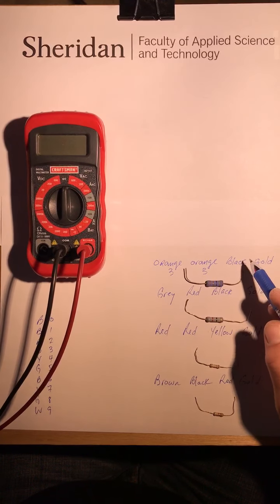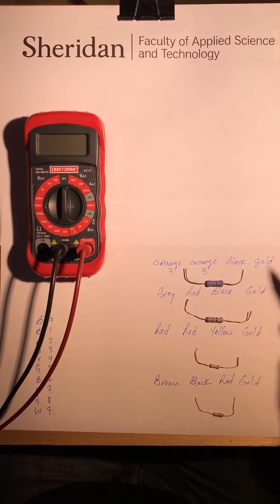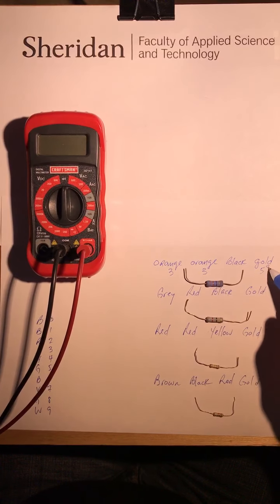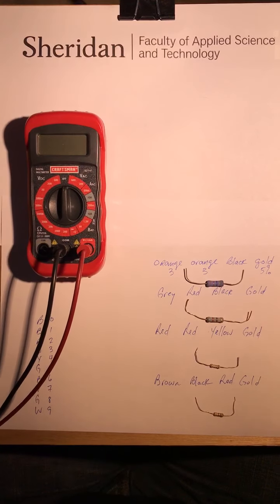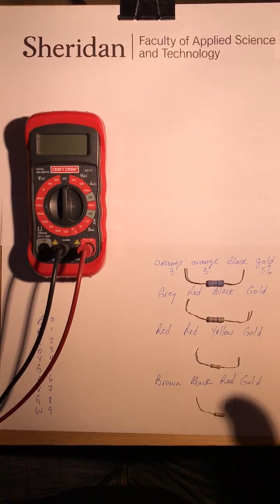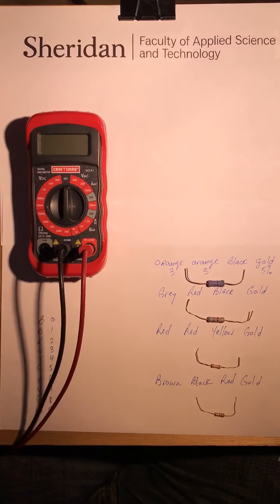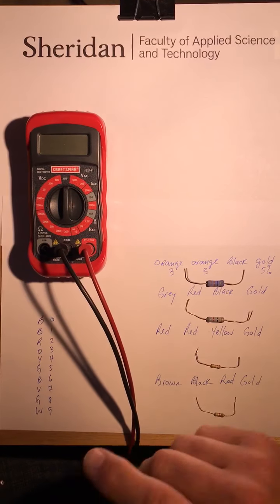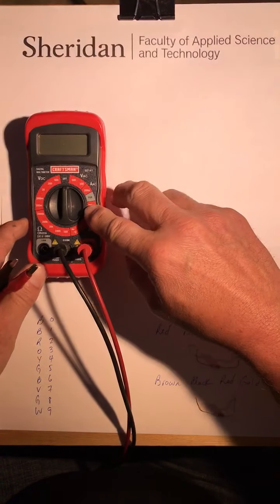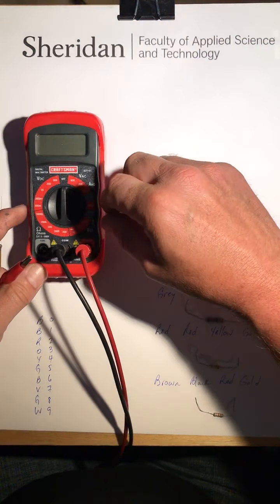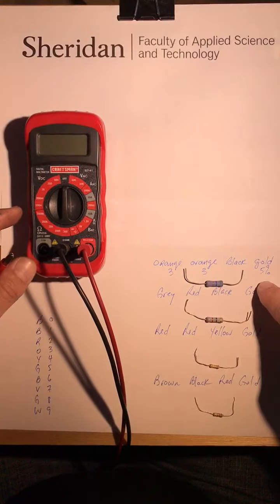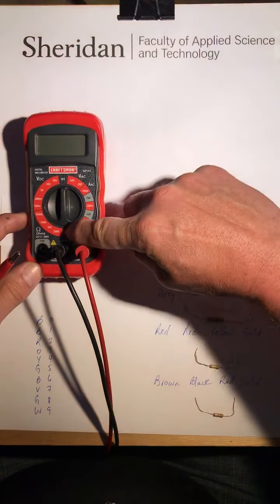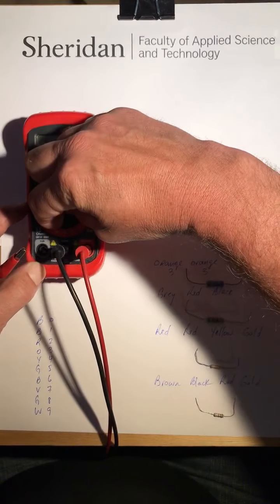That one I'm expecting to be about thirty-three ohms, give or take, within the five percent range. My lowest setting is 200 ohms, so I'm gonna set it to that. If you're unsure which one to use, use the highest one and keep going down.